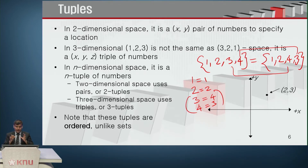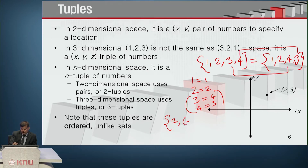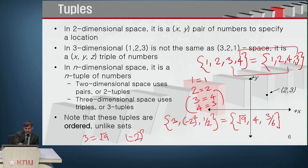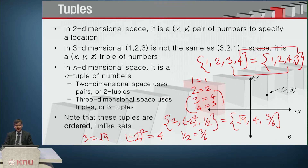Let me give another example. Say you have the tuple (3, (-2)^2, 1/2). This is equal to (√9, 4, 3/6) because 3 equals √9, (-2)^2 equals 4, and 1/2 equals 3/6. So that is an ordered set where each position matches. Tuples are ordered unlike sets, just for your information.